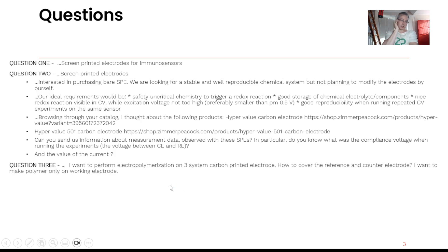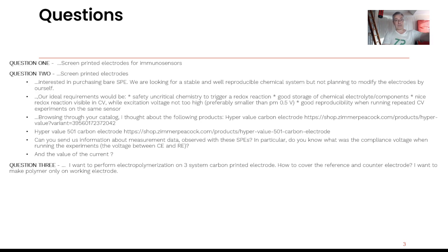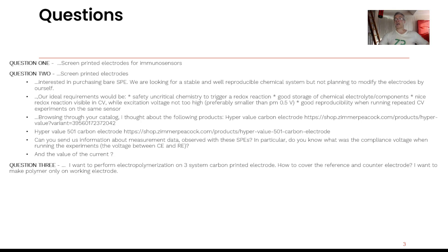Question number three is much shorter and simpler. They would like to do electro-polymerization on a working electrode — there's a little black line in the middle of this device, that's the working electrode. They'd like to electro-polymerize onto that working electrode but don't want to affect the reference and counter. I'll make a comment on that at the end.